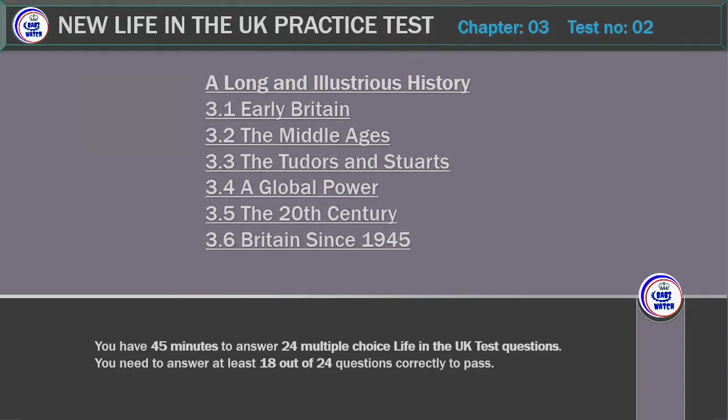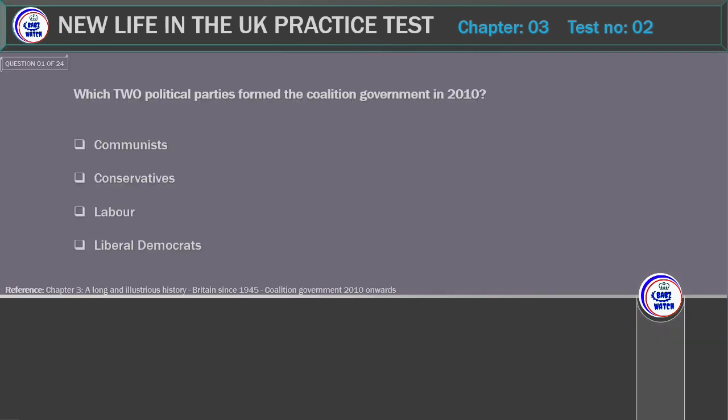New Life in the UK Test. Chapter 3 Test 2: A Long and Illustrious History. Topics covered include Early Britain, the Middle Ages, the Tudors and Stuarts, a global power, the 20th century, and Britain since 1945.